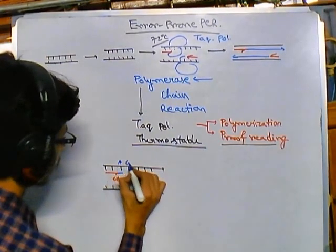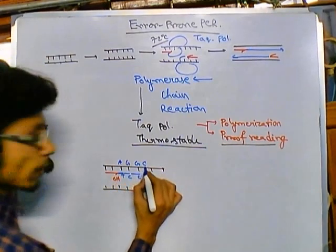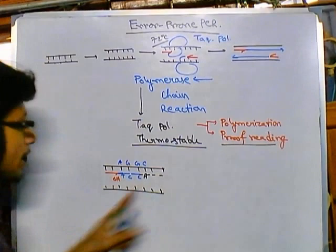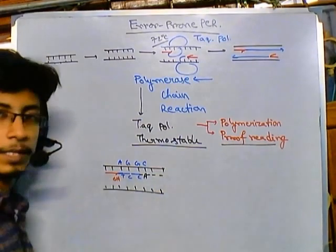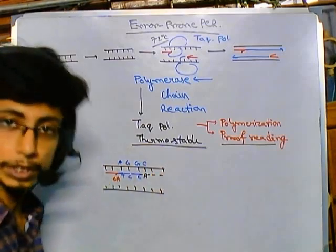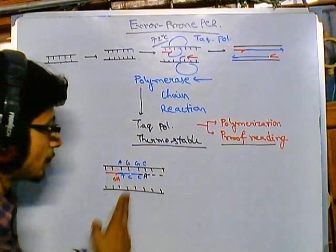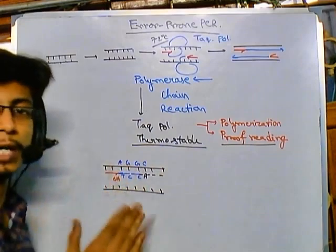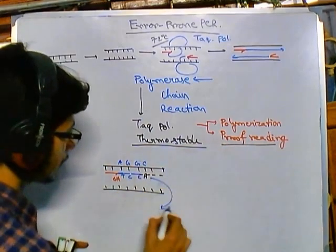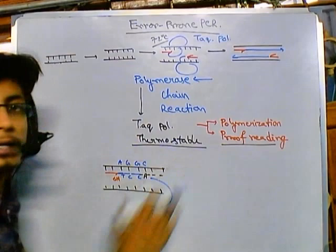Suppose the polymerase adds A, G, G, C — then T is correct, C is correct, another C is correct, but where there should be a C it adds an A. This is a mistake. When polymerase incorporates a misnucleotide, it has a tendency to check for this misincorporation and cleave the mismatch out. This is called the proof reading activity — it kicks out the wrong base so a correct nucleotide can be placed, and polymerization continues.